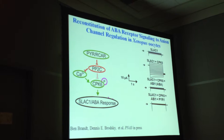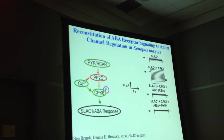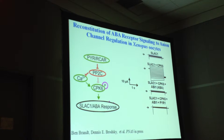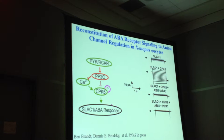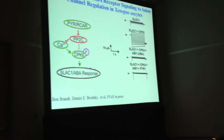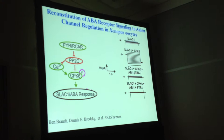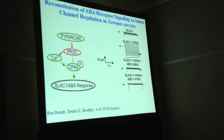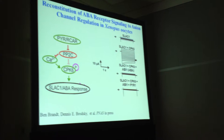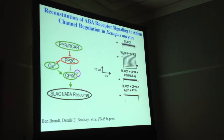We're taking a target of rapid ABA signaling in guard cells — the SLAC1 anion channel. Expressing this in Xenopus oocytes gives no large activity, but co-expressing the calcium-dependent protein kinase CPK6 strongly activates the anion channels. Co-expressing protein phosphatase ABI1 shuts off the channels; co-expressing an ABA receptor does not affect activation without ABA. What's new here is that CPK6, previously suggested not to function in this response, in fact does strongly affect this pathway.